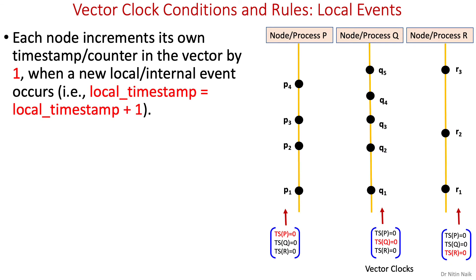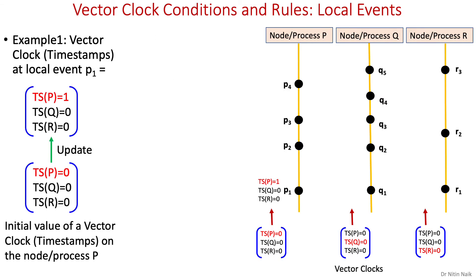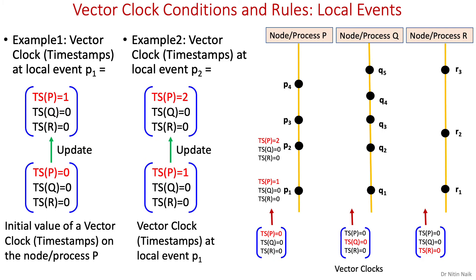First condition and rule for local events: each node increments its own timestamp or counter in the vector by one when a new local or internal event occurs on that node. However, other nodes' timestamps remain unchanged in the vector. A sent message event is also a local event and the timestamp is incremented in the same way. For example, the initial value of the vector clock on node P is 0, and when a new local event P1 has occurred, only the local timestamp of node P is incremented. Next, P2 has occurred locally after P1 and the local timestamp value is 1, therefore it will be 2 for P2.